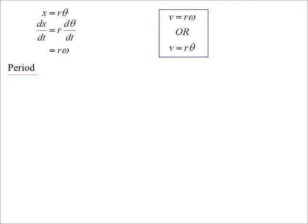Period. Time taken for one revolution turns out to be 2π divided by that angular velocity. That's how you can work that one out.